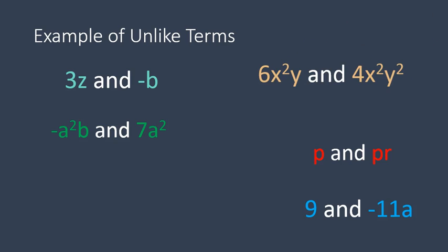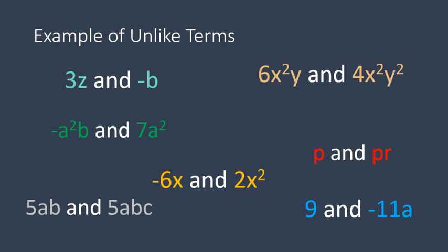x squared y and x squared y squared. Notice in that one I didn't even read the numbers. You don't have to look at the numbers to know if they're like or unlike terms. You just look at the variables. x squared y and x squared y squared. They are different. They're very similar, but they're not exactly the same. So they are also unlike terms. And negative 6x and 2x squared. Again, they're not exactly the same. So they are not like terms. And 5ab and 5abc. They have to be completely exactly alike in all ways to be like terms. So here are some examples of unlike terms. Any variables or exponent of the variable that is not the same is considered an unlike term.